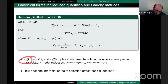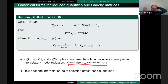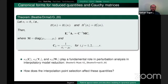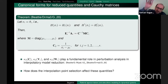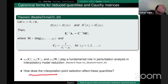This is important because the condition number of this Cauchy matrix and the primitive basis V play a fundamental role in the perturbation analysis in interpolatory model reduction. One might be worried: Cauchy matrices are not known to be well-conditioned, and if they are determining the stability of the reduced model, that could be a concern. So we asked: how does the interpolation point selection affect these quantities?